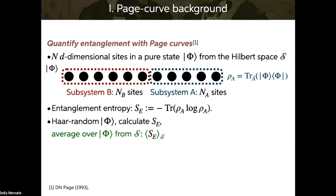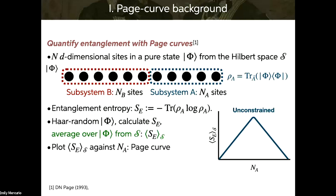To move the dependence on the state to dependence on the Hilbert space, we randomly select the state phi, calculate the entanglement entropy, and then average over different states phi drawn from the Hilbert space. We take this average value and plot it against N_A, and we have a page curve. The page curve grows until you get to the mid-sized cut — where you've cut the system equally in half — then it peaks and comes back down. It is symmetric.